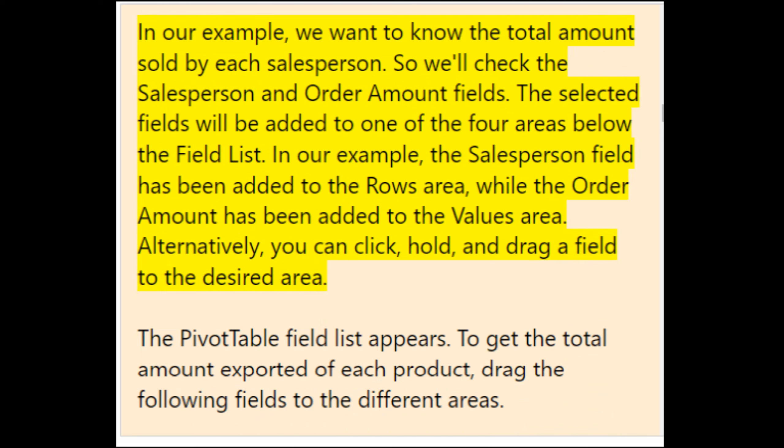The selected fields will be added to one of the four areas below the field list. The Salesperson field is added to the Rows area, while the Order Amount is added to the Values area. Alternatively, you can click, hold, and drag a field to the desired area.